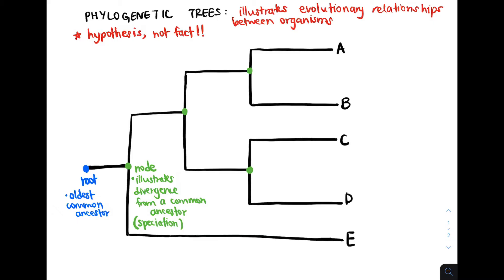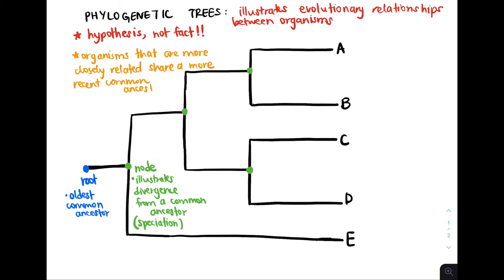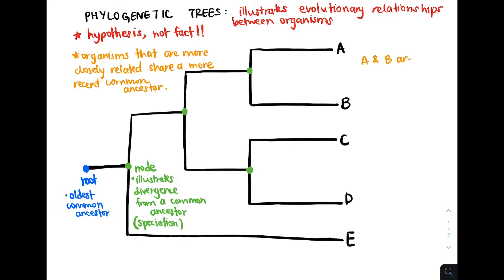Another key idea is that closeness between two species is determined by how recently they share a common ancestor. Organisms that are more closely related share a more recent common ancestor than either of those share with any other groups. By reading this tree, we can see that species A shares a more recent common ancestor with species B than either of them share with any other organisms on this tree. Therefore, we can hypothesize that species A and species B are more closely related to each other than either of them are to species C, D, or E.